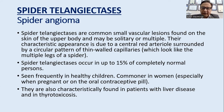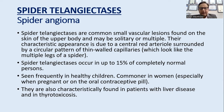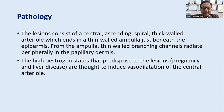Spider telangiectasias occur in 15% of completely normal persons and are frequently seen in healthy children. They are common in women, especially pregnant women and those on oral contraceptives, and are characteristically found in patients with liver disease and thyrotoxicosis. So pregnancy, contraceptive pill, liver disease, and thyrotoxicosis are common causes of spider telangiectasias.